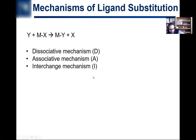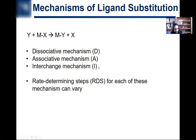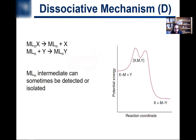These are given the symbols D, A, and I. The rate-determining step, or RDS, can vary for each of these mechanisms. We're going to start with the dissociative mechanism, the D-mechanism.